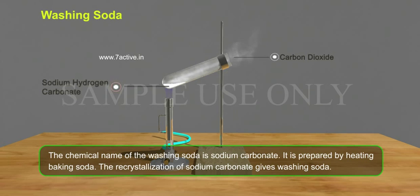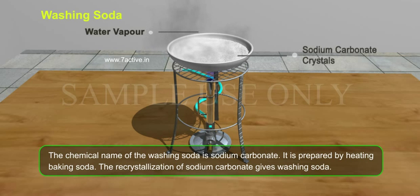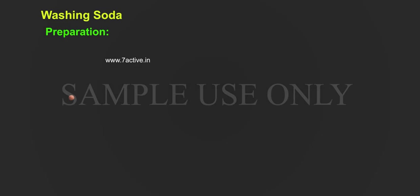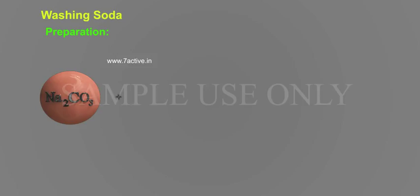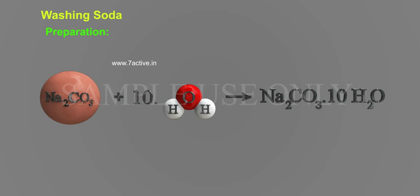Washing soda preparation: The chemical name of washing soda is sodium carbonate. It is prepared by heating baking soda. The recrystallization of sodium carbonate gives washing soda: Na2CO3 plus 10H2O gives Na2CO3·10H2O.